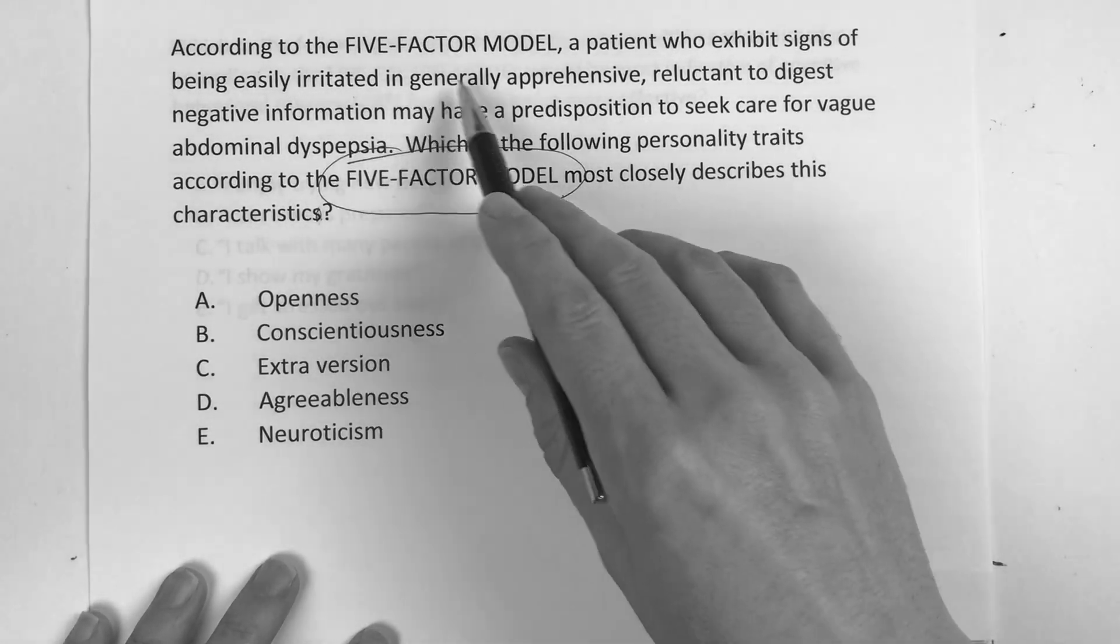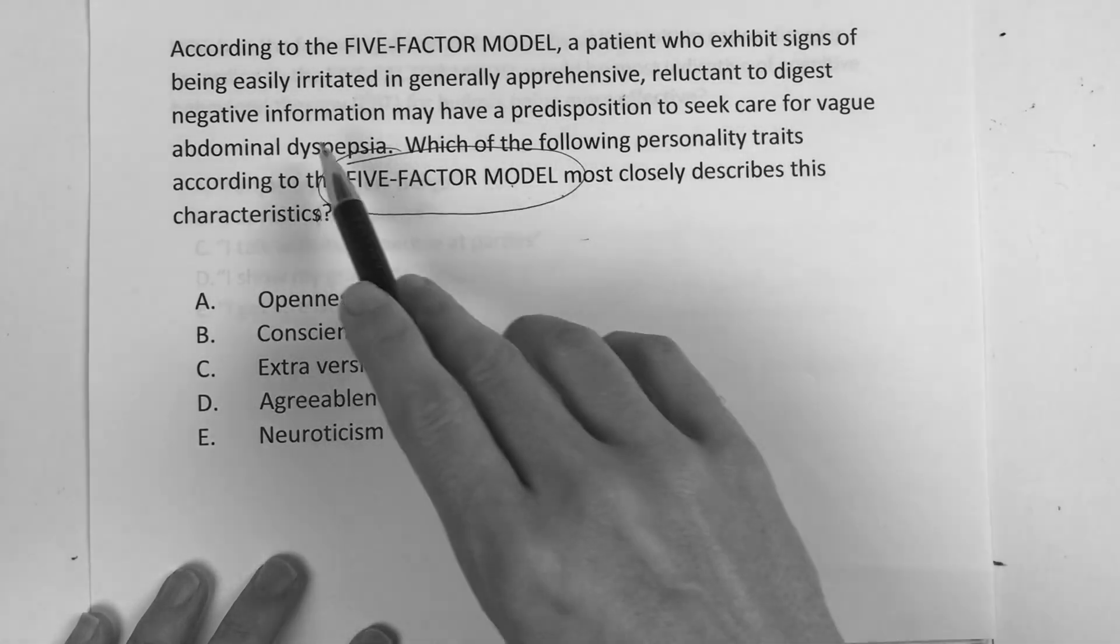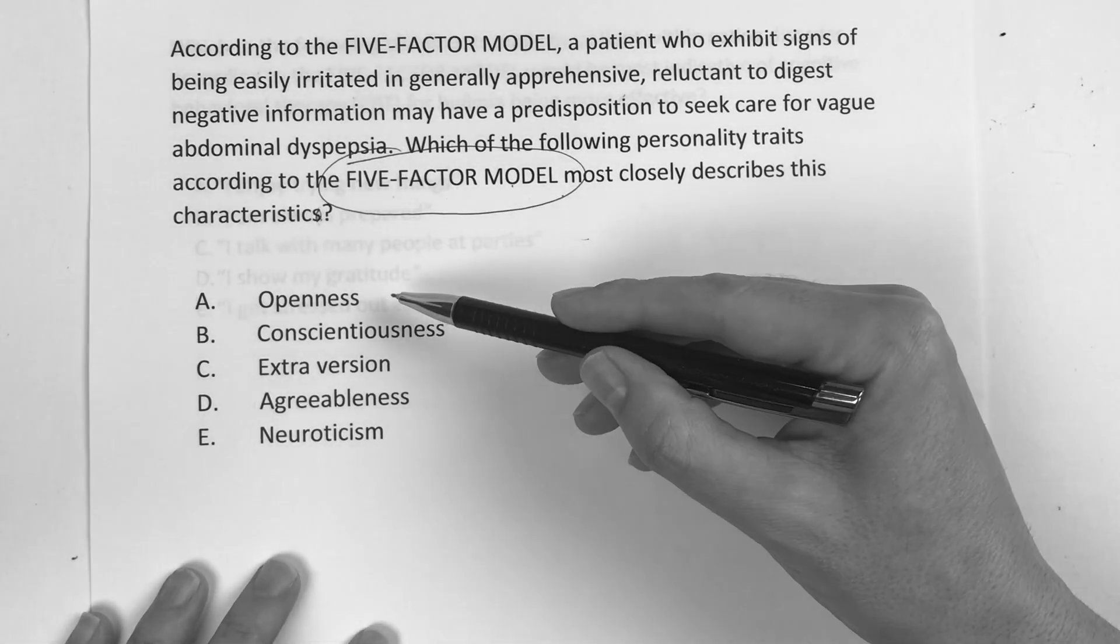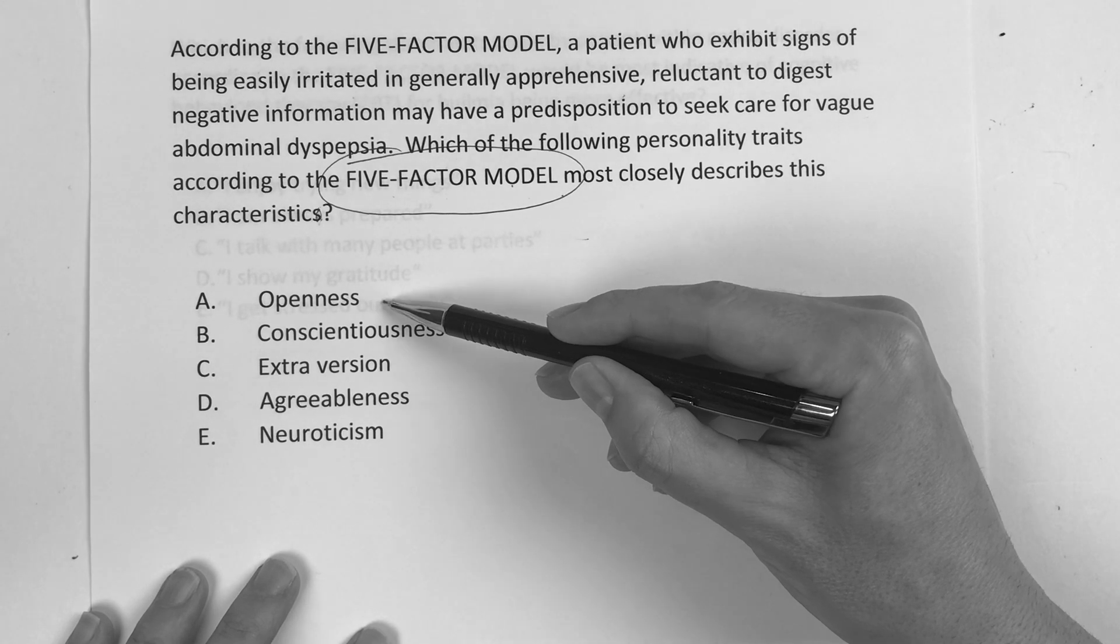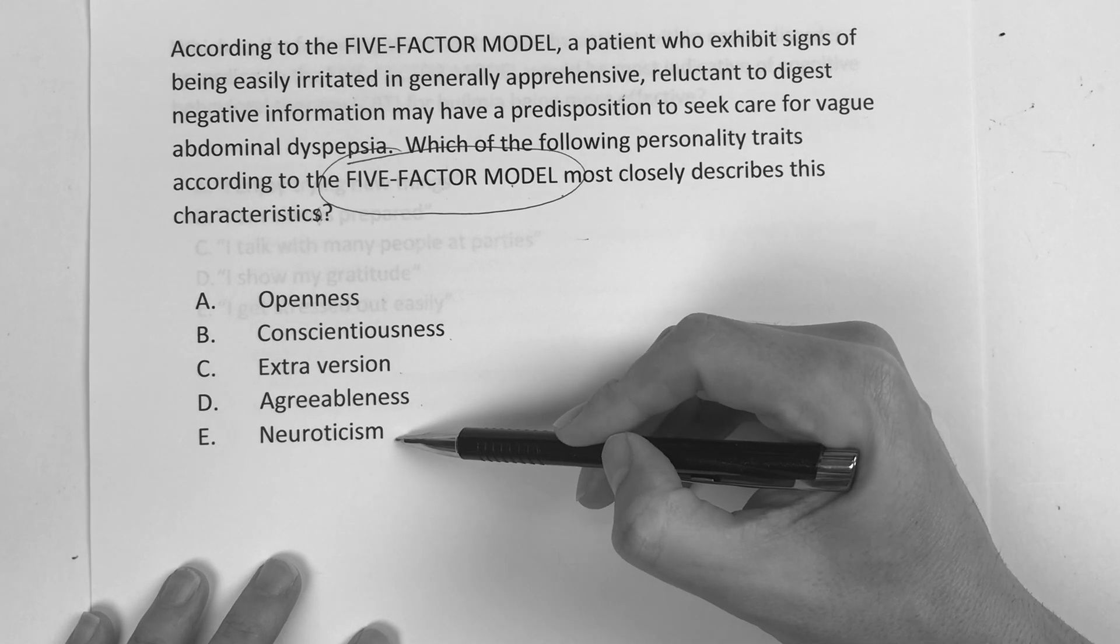So again, they got this person that's generally apprehensive, they're easily irritated, reluctant to digest negative information, and we have these answer choices down here. Is it openness, conscientiousness, extroversion, agreeableness, or neuroticism?